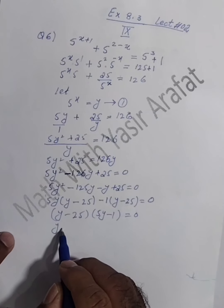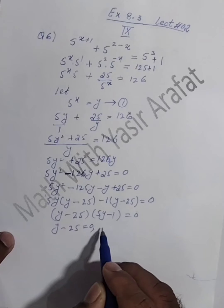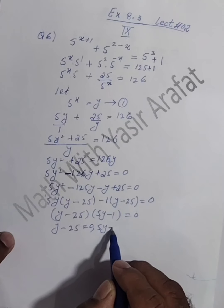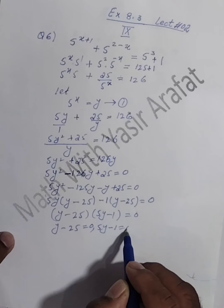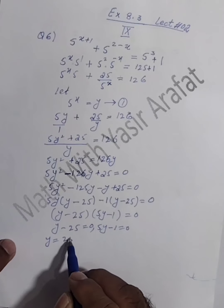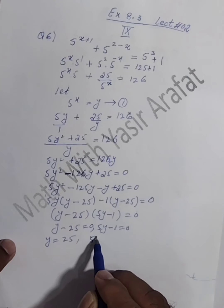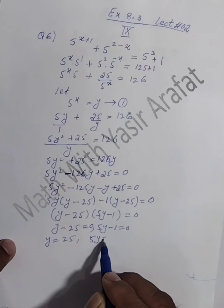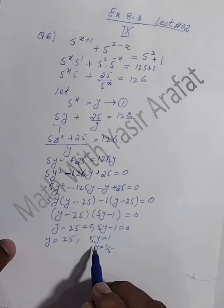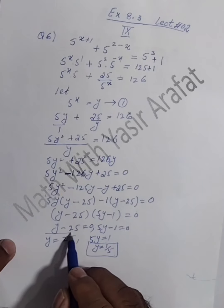Both factors are equal to zero, so solving one by one: y - 25 = 0 gives y = 25, and 5y - 1 = 0 gives y = 1/5. These are the two values of y.